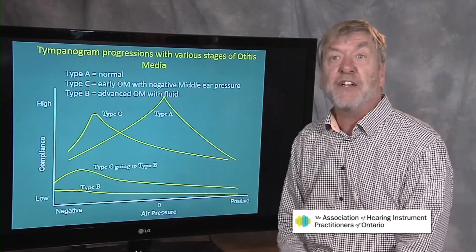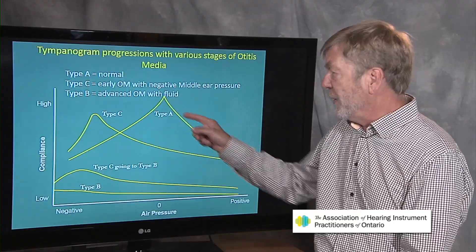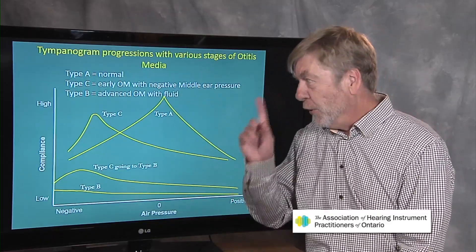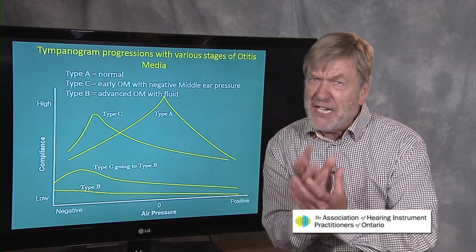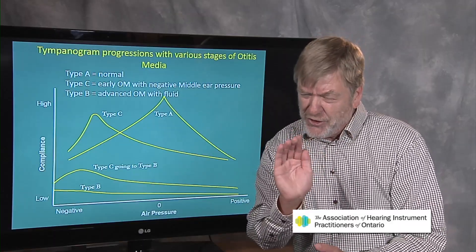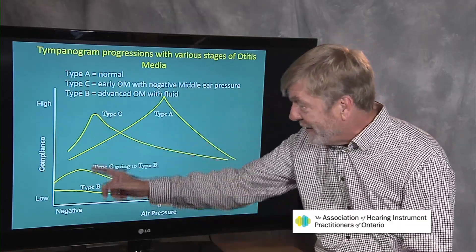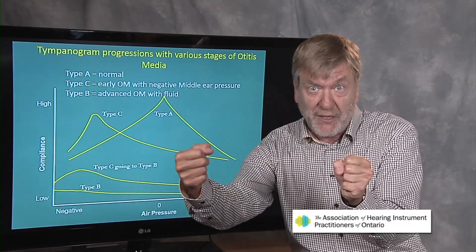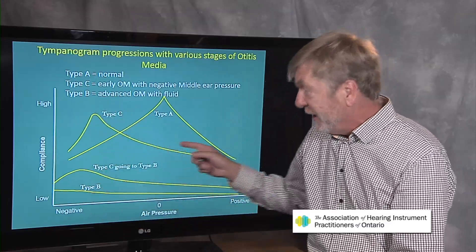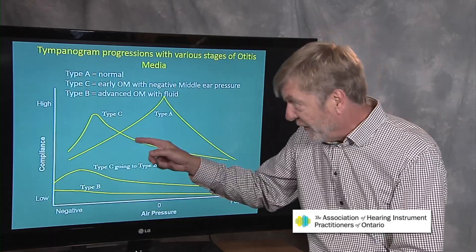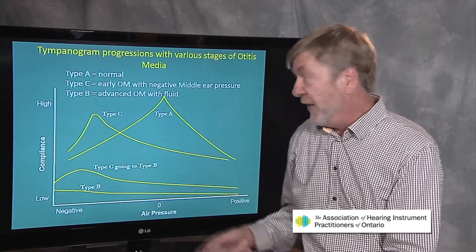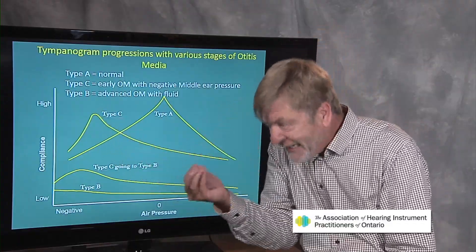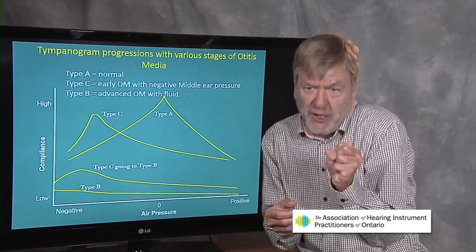Let's look at otitis media and tympanometry. Here's a normal tympanogram, often called a Type A — its peak is over normal room air pressure, that's happy land. With early otitis media, there's negative middle ear pressure and the eardrum is retracted inward. We have to use negative air pressure in the outer ear canal so it's even-steven with the negative pressure in the middle ear space. This is called a Type C tympanogram — it has a peak like the Type A, but it's over negative air pressure, because we needed negative outer ear canal pressure to match the negative pressure behind the eardrum.